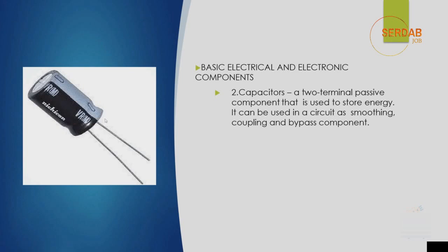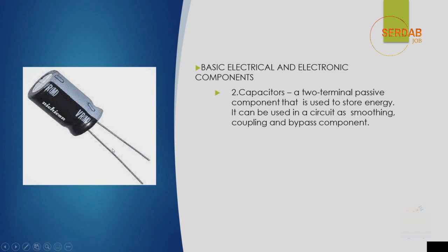The second component is a capacitor. This is the physical layout of a capacitor — it's a two-terminal passive component that is used to store energy. It can be used in a circuit as a smoothing, coupling, and bypass component. Usually this type of capacitor is called a polarized capacitor. It has polarity, and the gray area indicates the negative terminal while the other is the positive terminal.